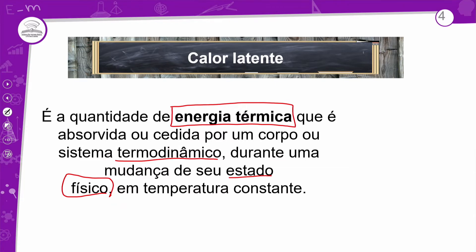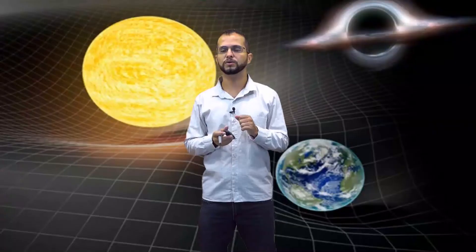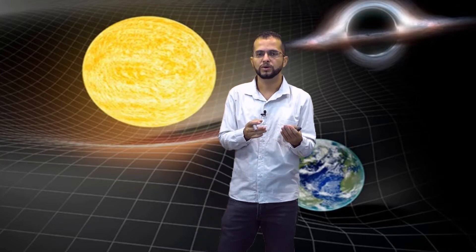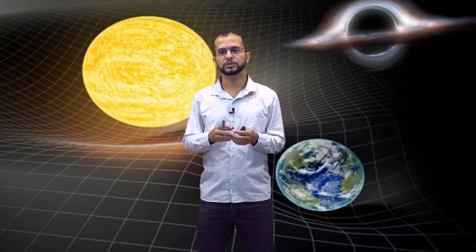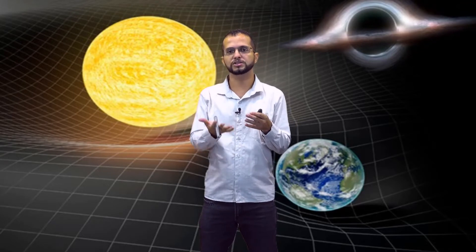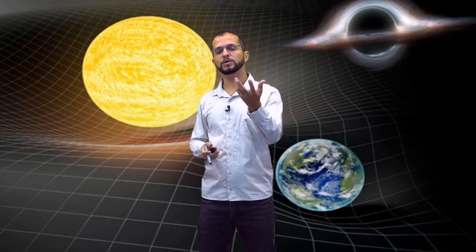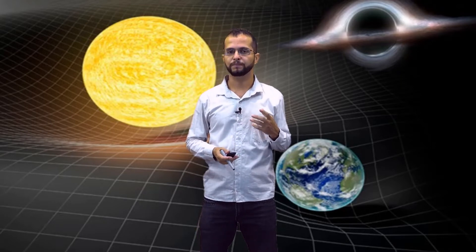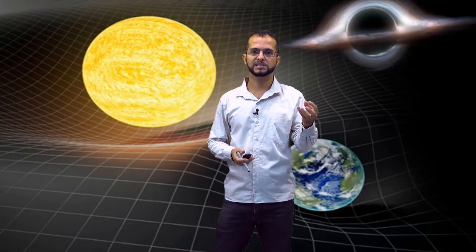Toda vez que nós falarmos de quantidade de calor, existem duas situações. O calor tem formas de transferência — condução, convecção e radiação. É uma transferência de energia térmica de um corpo para outro ou de um ambiente para outro. Na convecção, a matéria se movimenta: ar frio vai para baixo, ar quente para cima — correntes marítimas, brisa e tudo mais. Então, quando falamos de calor: se muda a temperatura, é calor sensível; se muda o estado físico, é calor latente.